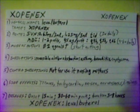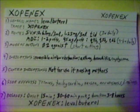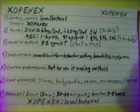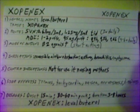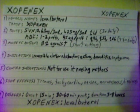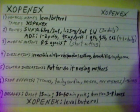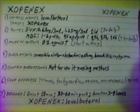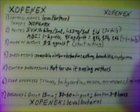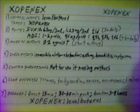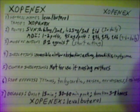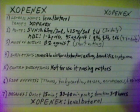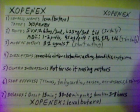Xopenex. Generic name: Levalbuterol. Trade name: Xopenex. Route can be by small volume nebulizer in dosages of 0.63 mg per 3 mL or 1.25 mg per 3 mL, given TID — 3 times daily.